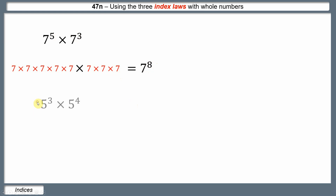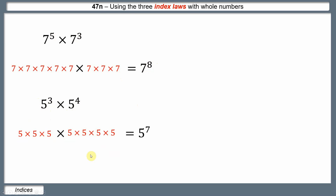Let's see if this works in another example: 5 cubed times 5 to the power of 4. 5 cubed is 5 times 5 times 5; 5 to the power of 4 is 5 times 5 times 5 times 5. Altogether we've got 5 to the power of 7. So again, the power of 3 and the power of 4 get added to give a power of 7.